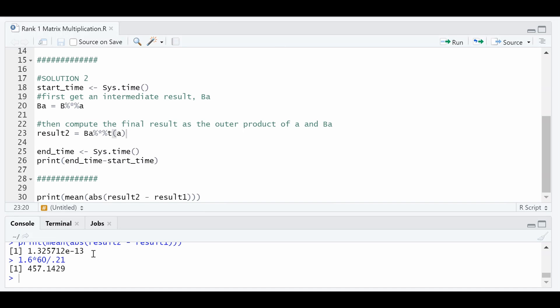Okay. So that's it. That's how you can use the fact that you have a rank one matrix in your operations to speed up your code by maybe 450 times if you have 5,000 by 5,000 matrices. Alright. Until next time.